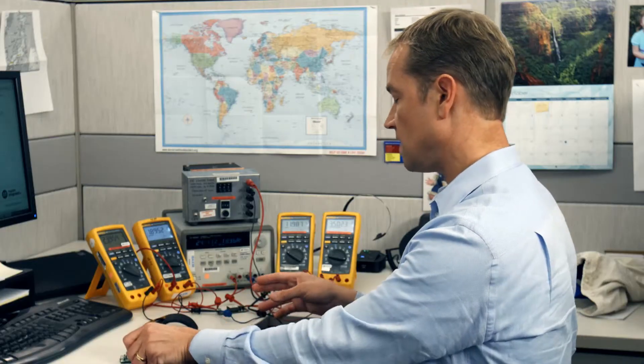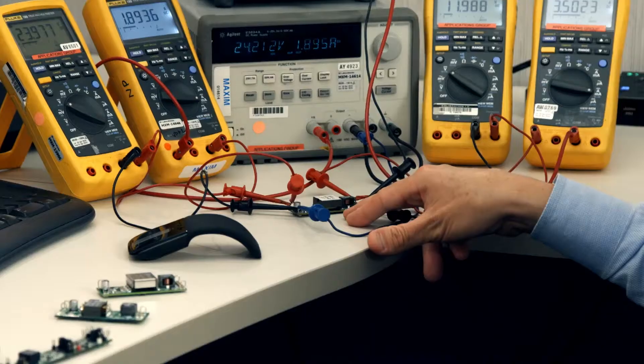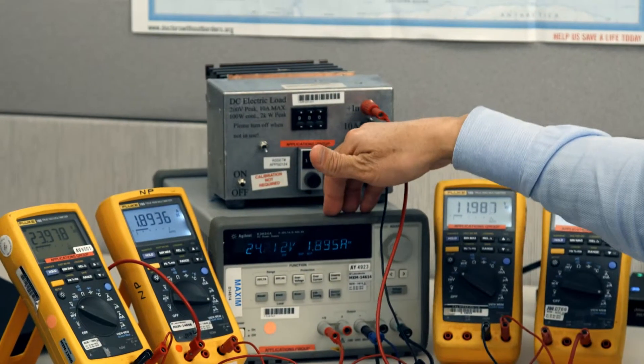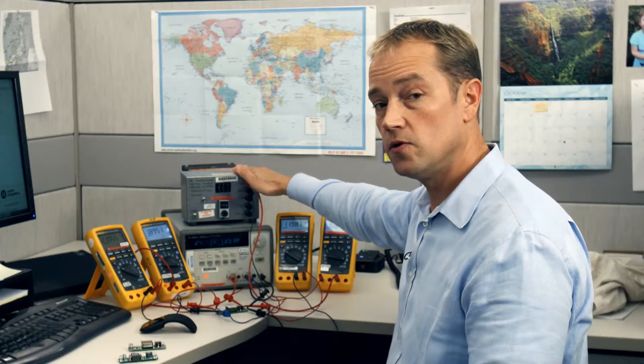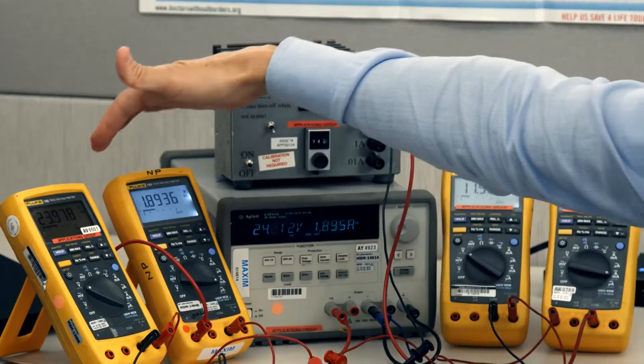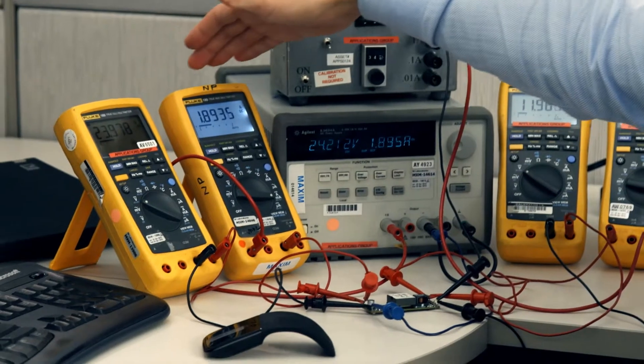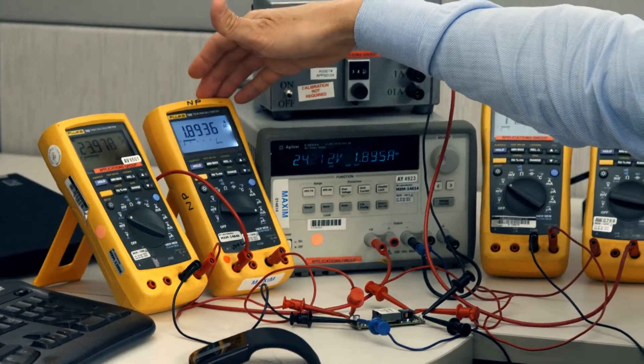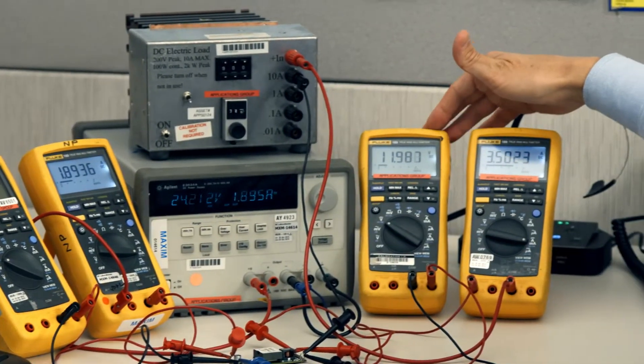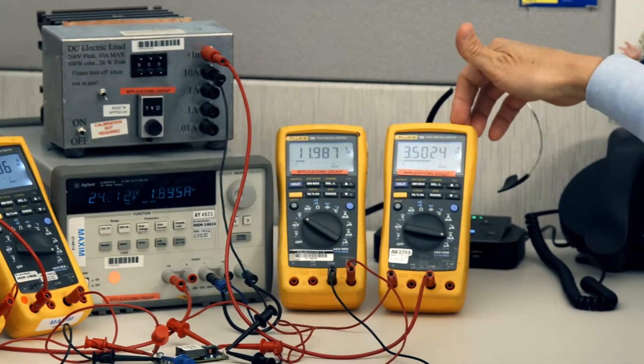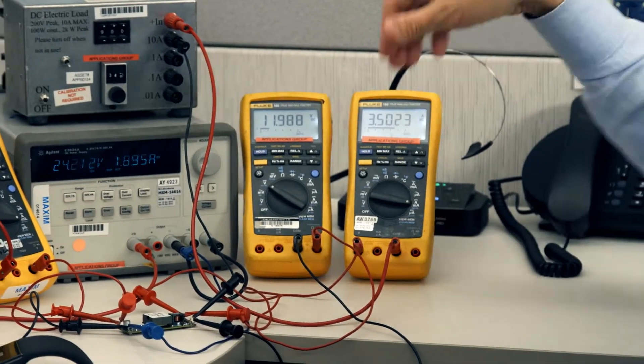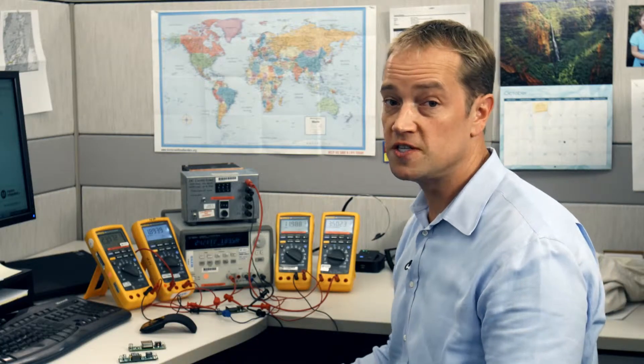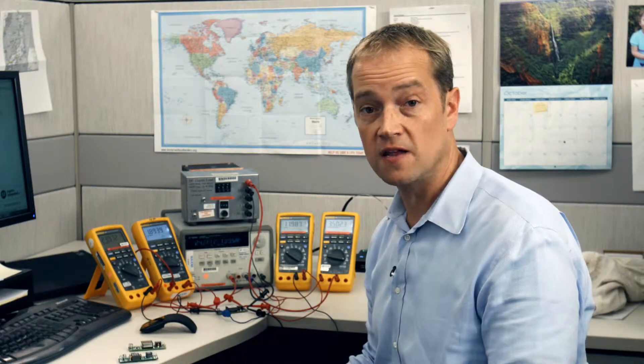Here you can see I've got MaxRefDes 48 connected up to a power supply and a load. You can see on the input I've got 24 volts running at 1.9 amps, and on the output I've got 12 volts running at 3.5 amps. Do the math and you can see that we're running at above 92% efficiency.